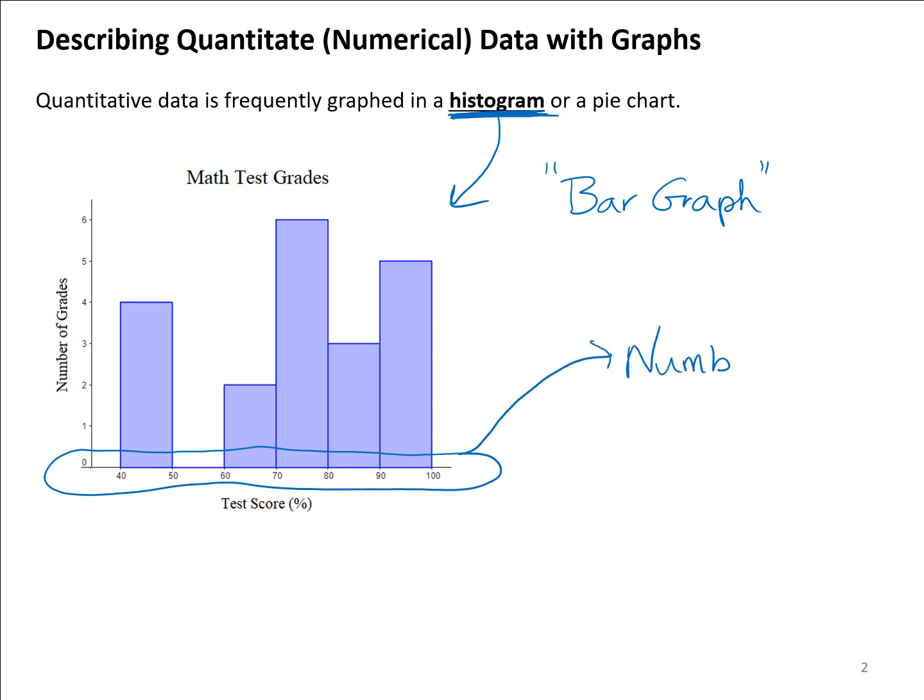The bars are going to show you where your bins are. Each bar, if we look at the number line, this first bar goes from 40 to 50, so we have a bin from 40 to 50.